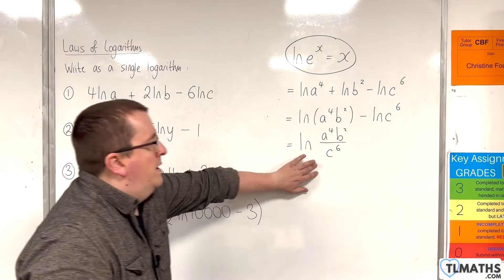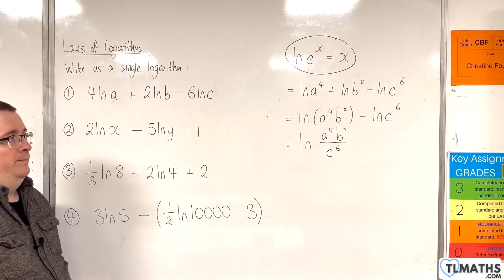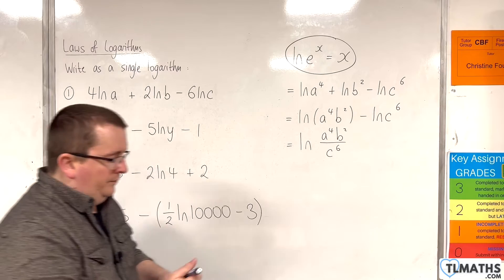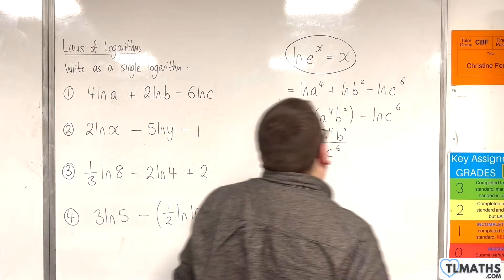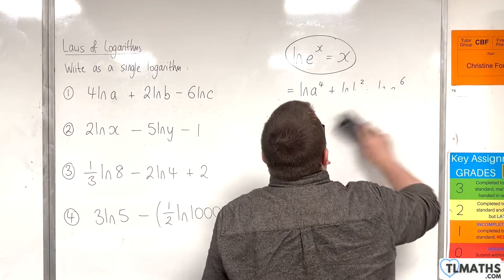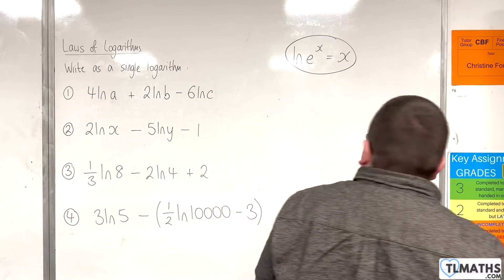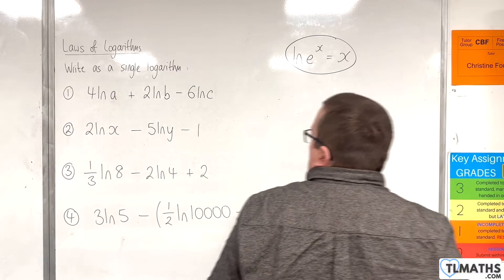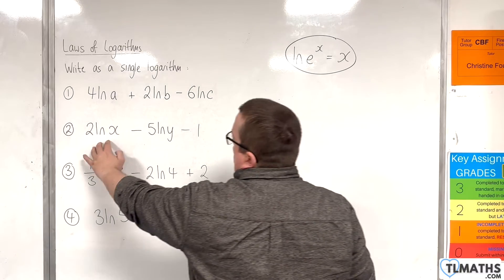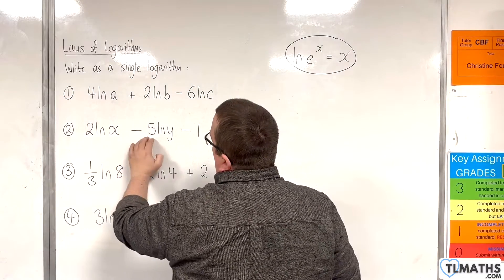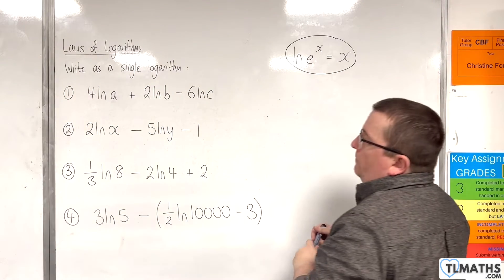So now it is written as a single logarithm. For the second example, we have 2 times the natural log of x, take away 5 times the natural log of y, take away 1.